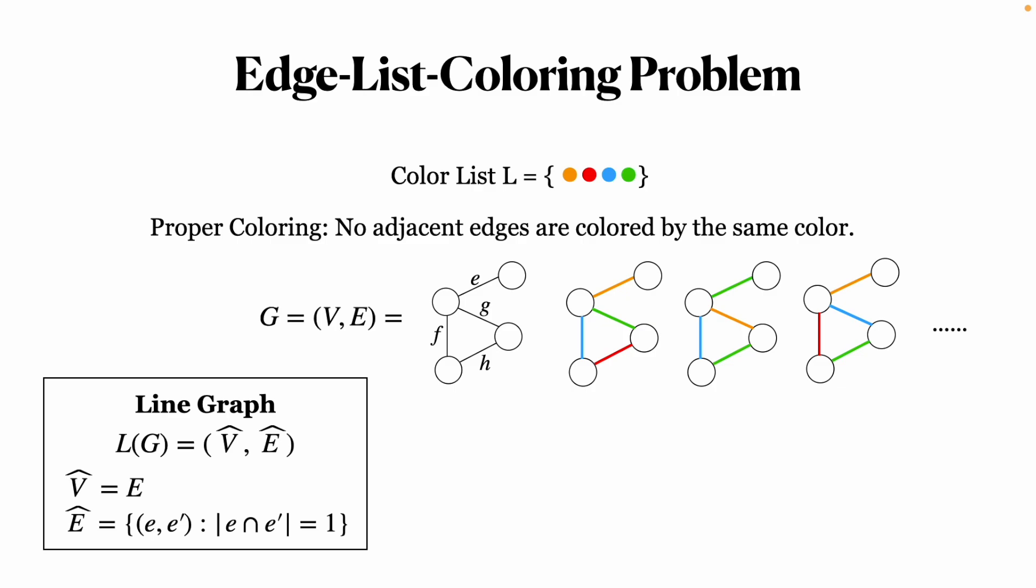In this graph, the vertices are the edges of the original graph and two vertices are adjacent if their corresponding edges are adjacent in G. As you can see, the edge coloring instances translate directly to vertex coloring instances on the line graph.